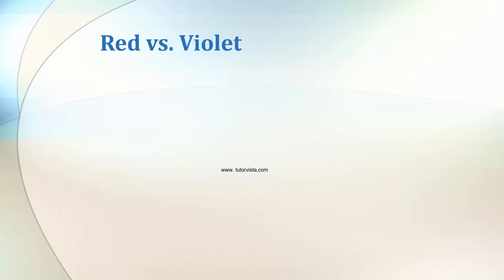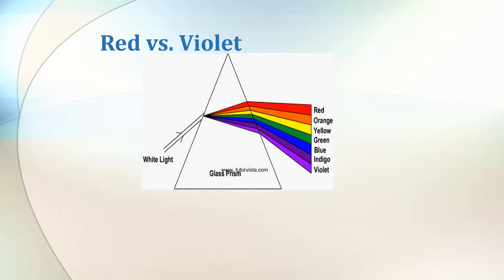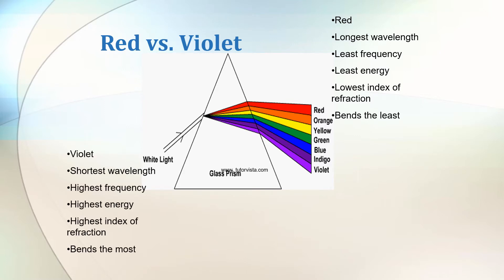Let us compare the extreme components of the color spectrum, red and violet. Red has the longest wavelength, the highest frequency, highest energy, highest index of refraction, and bends the most.